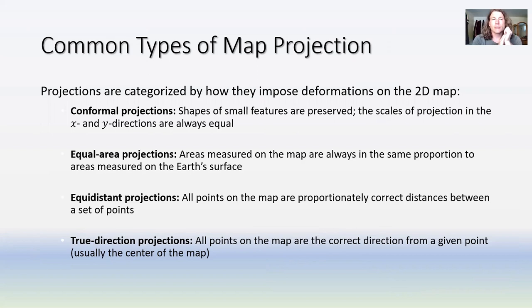There are a wide variety of types of map projections. Projections are generally categorized based on how they impose deformations on the map. Conformal projections preserve the shapes of small features, and the scale of the projection in the x and y direction is always equal. A conformal projection would be like the Mercator, which I've already talked about.